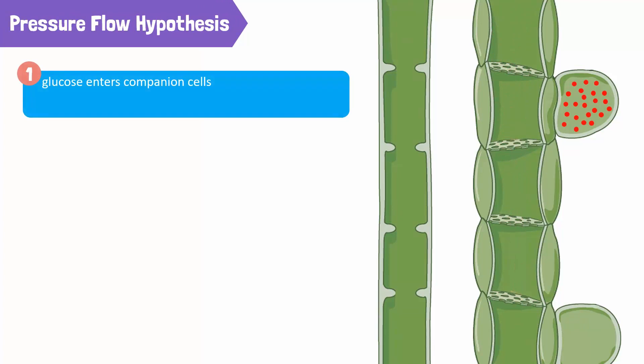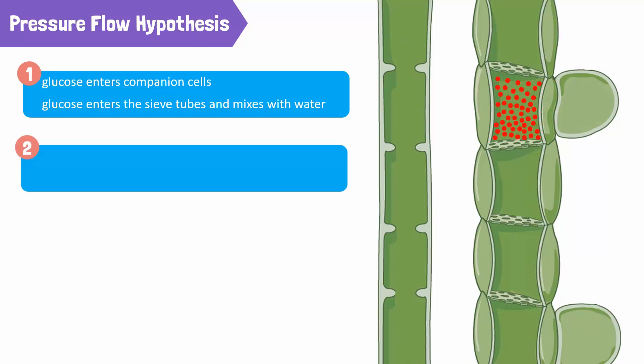The movement of glucose through the phloem is thought to happen because of the pressure flow hypothesis. According to the pressure flow hypothesis, the glucose produced in the leaves moves into the companion cells. Glucose then enters the phloem sieve tubes and mixes with the water. The concentration of water decreases after glucose enters.